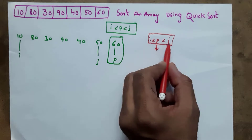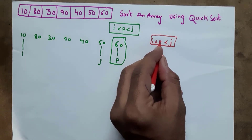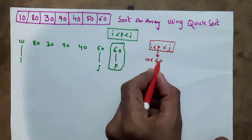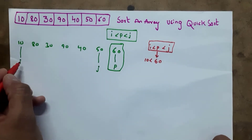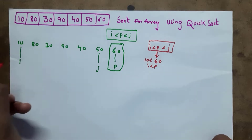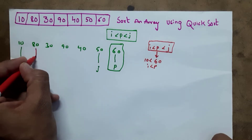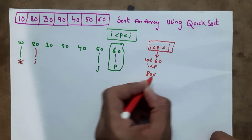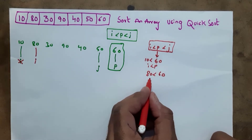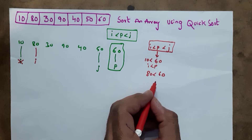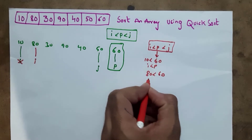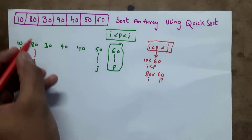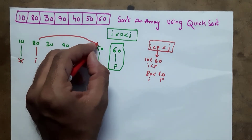We need to perform sorting. I took pivot as 60. The rule is i < p. What is i? i is 10. 10 is less than 60 — this condition is true. If condition is true, move i one position forward and again compare i and p. Now i is 80. 80 is not less than 60, so the condition is false.